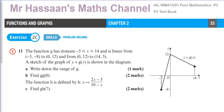From the sketch of y = g(x), the key points are (-5, -8), (0, 12), and (14, 5). The y-coordinate at the right endpoint is 5.